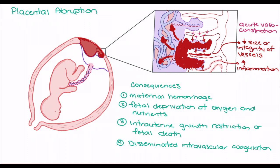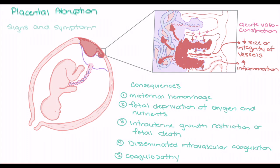Due to the loss of adequate circulation, the placenta is at risk of ischemia. This ischemia is particularly dangerous because the placenta contains a number of clotting factors. As the placenta becomes necrotic, these clotting factors can be released into the bloodstream, increasing clotting and further impacting disseminated intravascular coagulation.